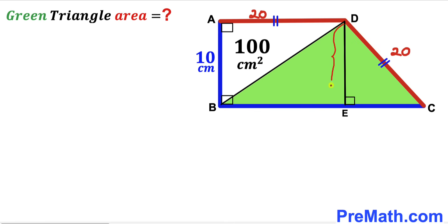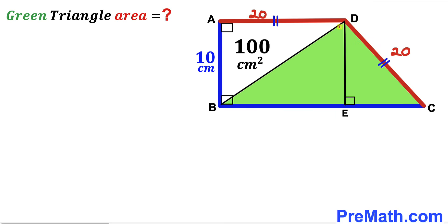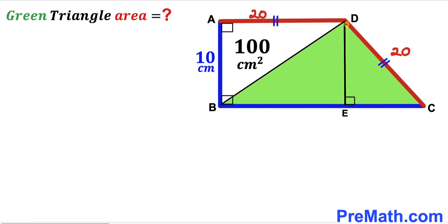We drop a perpendicular DE onto base BC. This perpendicular DE is the height of the green shaded triangle BCD, and the height is 10 centimeters, so DE equals 10 centimeters.